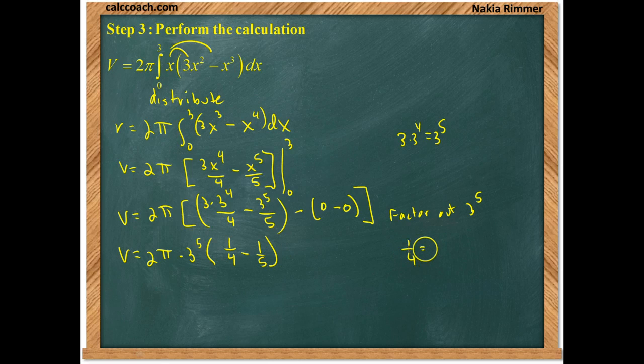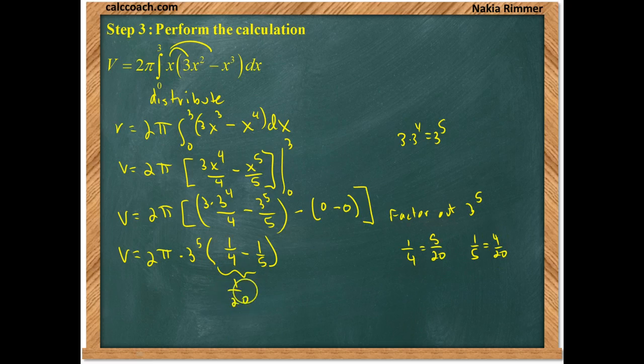And so, 1/4 is going to be, the common denominator between these two is 20. So, 1/4 is 5/20. 1/5 is 4/20. We subtract, and what we get is 1/20. We have this 2 pi, and 3 to the 5th is 243.